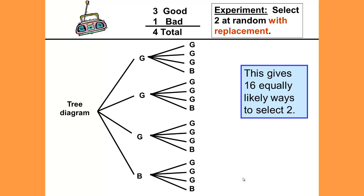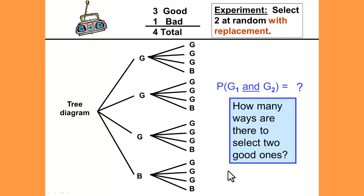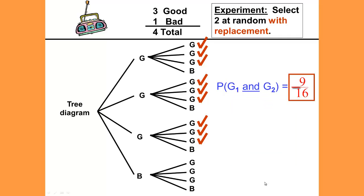Because we replaced the radio, the sample space remains the same each time. This gives us 16 equally likely ways to select two radios. The probability of the first radio being good and the second radio being good — we look at how many ways there are to get a good and then a good, and that would be 9 out of 16. This is how you do the problem using a tree diagram.